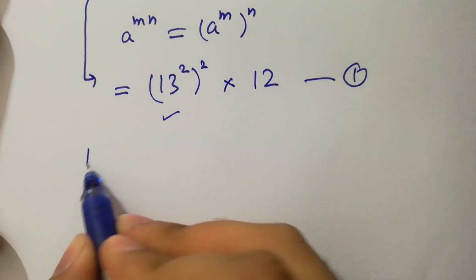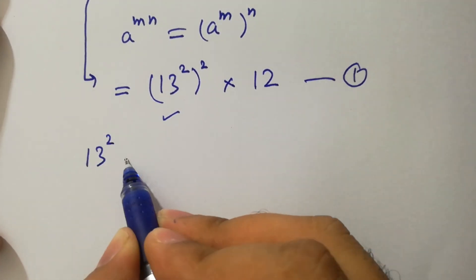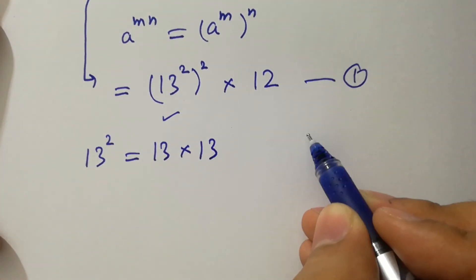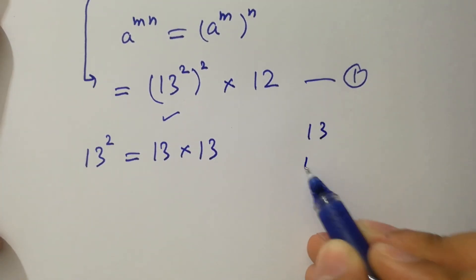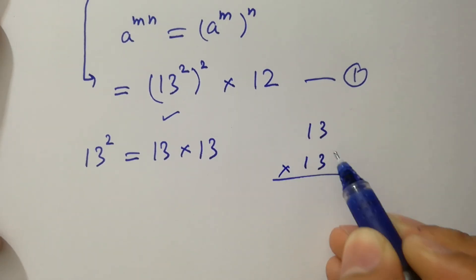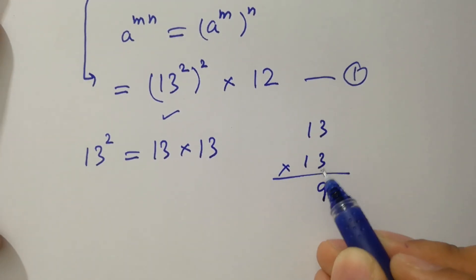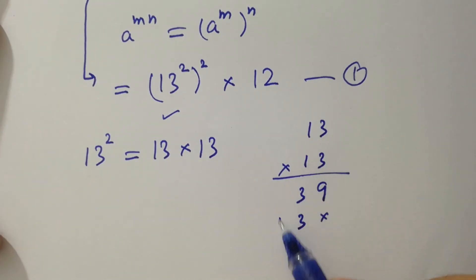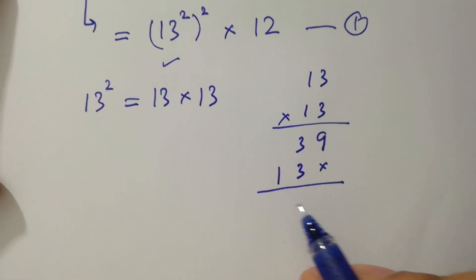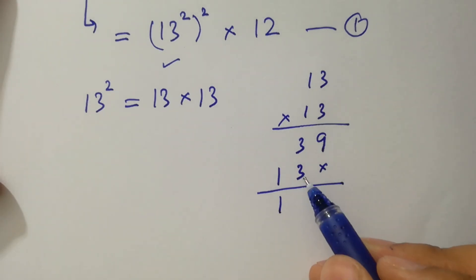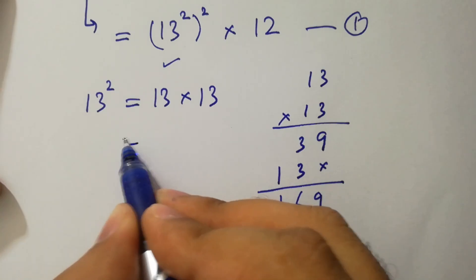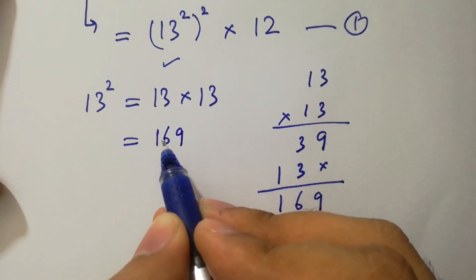First, we have 13 squared, which equals 13 times 13. Working through the multiplication: 3 times 3 is 9, 3 times 1 is 3, 1 times 3 is 3, 1 times 1 is 1. Adding the partial products: 3 plus 3 is 6, giving us 169. So 13 squared is 169.